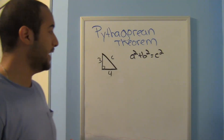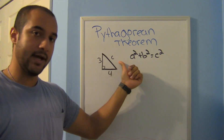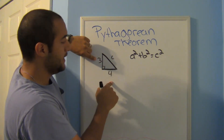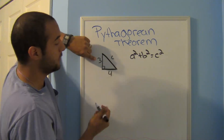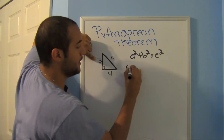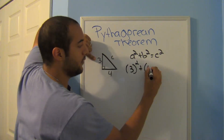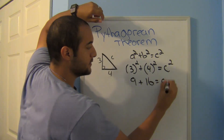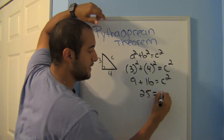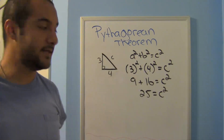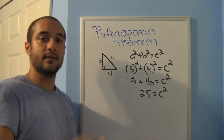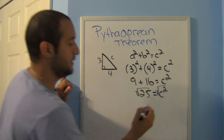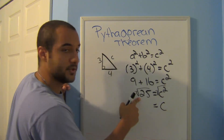Let's put it to use. Here I have a triangle with two legs: one leg is 3 and the other is 4, but I don't know the hypotenuse. Using the Pythagorean theorem, it doesn't matter which you choose for a or b — just keep C as the hypotenuse. So: 3 squared plus 4 squared equals C squared. 3 squared is 9, 4 squared is 16, so 9 plus 16 equals 25 equals C squared. To solve for C, take the square root of both sides: C equals the square root of 25, which is 5.